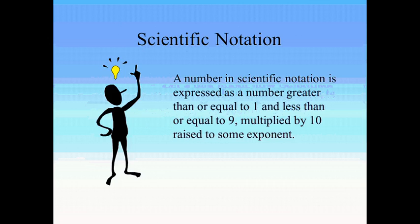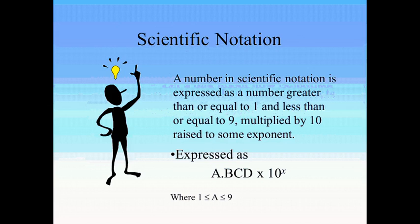So a number in scientific notation is expressed as a number greater than or equal to 1 and less than or equal to 9, and then multiplied by 10 raised to some exponent. So it's going to always look like a decimal bcd, as many decimals as you want or need here, times 10 to the x. And a is always going to be between 1 and 9, inclusive.